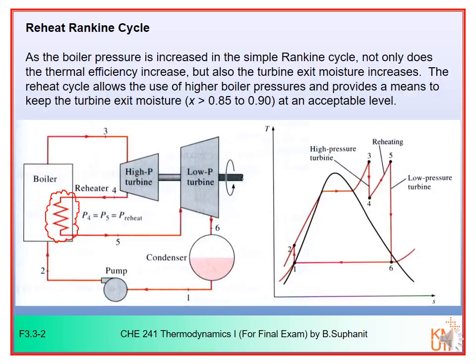The benefit you would obtain from the reheat scheme is that you will get more work. If you compare with the simple Rankine cycle where you have only a single expansion step — shown by the dashed line — when you have reheating and another expansion step, you can see you have more area in the cycle. More area means more W_net, so you have increased W_net.